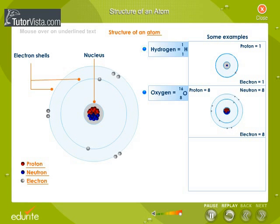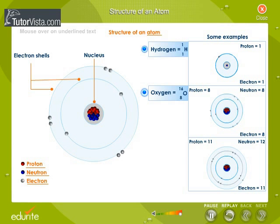If 11 protons, 11 electrons, and 12 neutrons are present in an atom, it forms an atom of sodium.